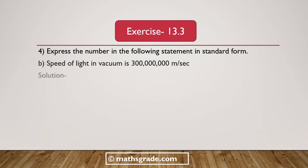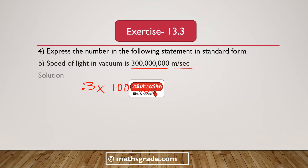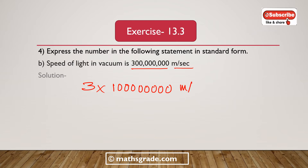Now the second part: the speed of light in vacuum. Counting the zeros in the number — there are 8 zeros. So it will be 3 multiplied with 10 to the power 8 meters per second. The speed of light in vacuum is 3 × 10⁸ meters per second.